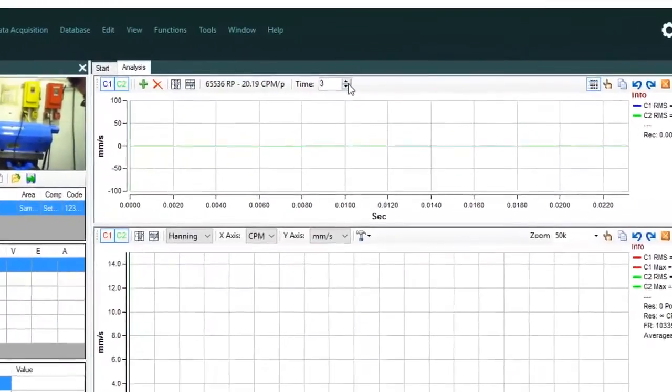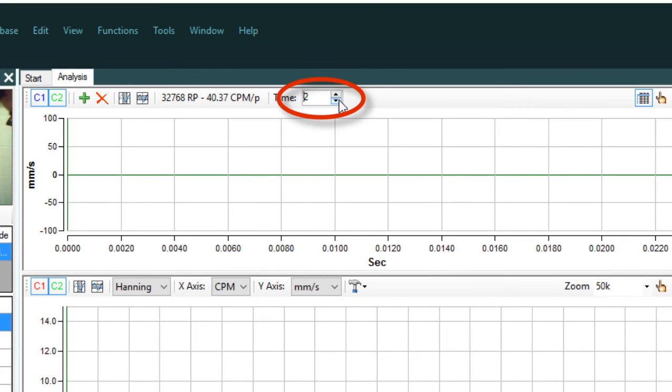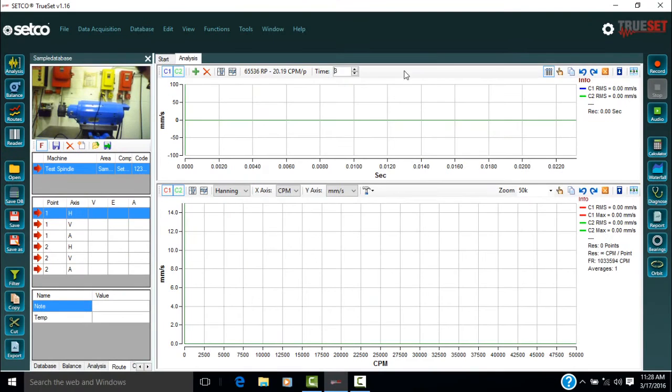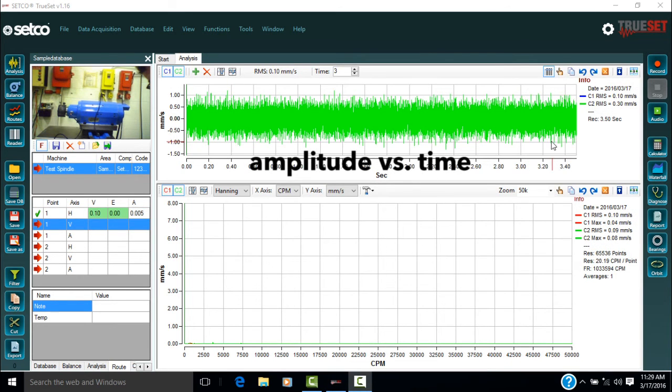The desired record time can be changed. Now, click on record to take the first reading from the defined point. The data will then be displayed on the two graphs. The top graph shows amplitude versus time and the bottom graph shows amplitude versus RPM.